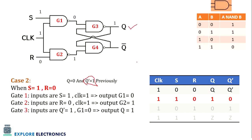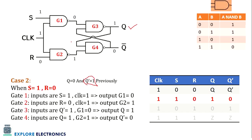This newly generated Q=1 is fed into Gate 4 along with Gate 2's output of 1. With inputs 1 and 1, Gate 4 output is 0, so Q bar becomes 0. So for S=1 and R=0, the output is Q=1 and Q bar=0. We say when S is equal to 1, the flip-flop sets its state — set meaning Q becomes 1.